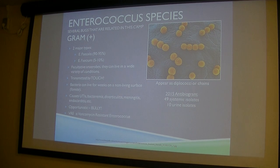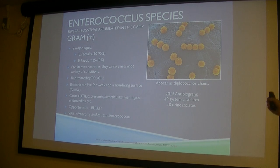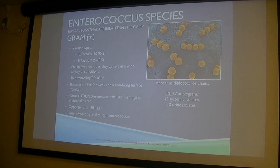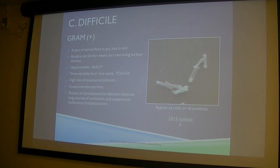Enterococcus is also round. We had 49 systemic and 10 urine isolates in 2015. The two major types are E. faecalis and E. faecium; E. faecalis is by far the highest percentage. These are facultative anaerobes so they can live in oxygen or non-oxygen environments. Transmitted by touch, and they can live for weeks on a non-living surface — called a fomite. They cause UTIs, bacteremia, diverticulitis, meningitis, endocarditis, and include VRE — vancomycin-resistant Enterococcus.